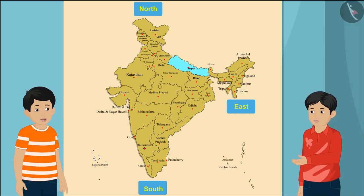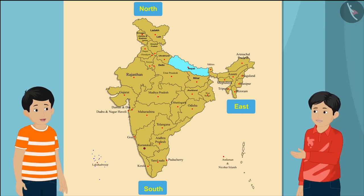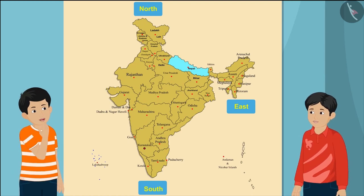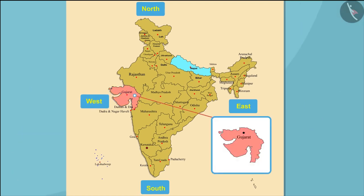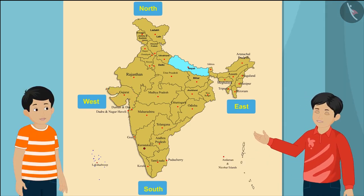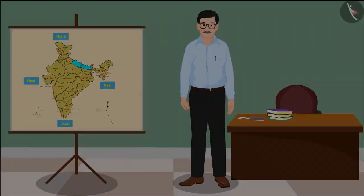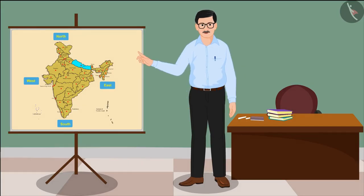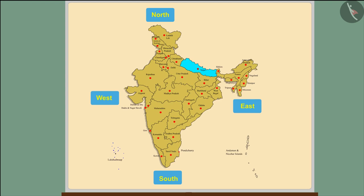Raju is now reading the map correctly. The states of Gujarat and Goa lie in the west direction. Children, you have just learned which states lie in the four directions of India.